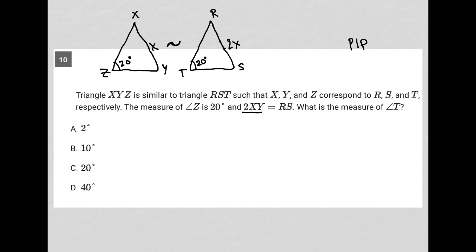What is the measure of angle T? Well, all that being said, the 2X part didn't really matter, because angle T already corresponds to angle Z. And given the definition of similar triangles, those two angles must be the same — they must be congruent. So choice C is the correct answer.